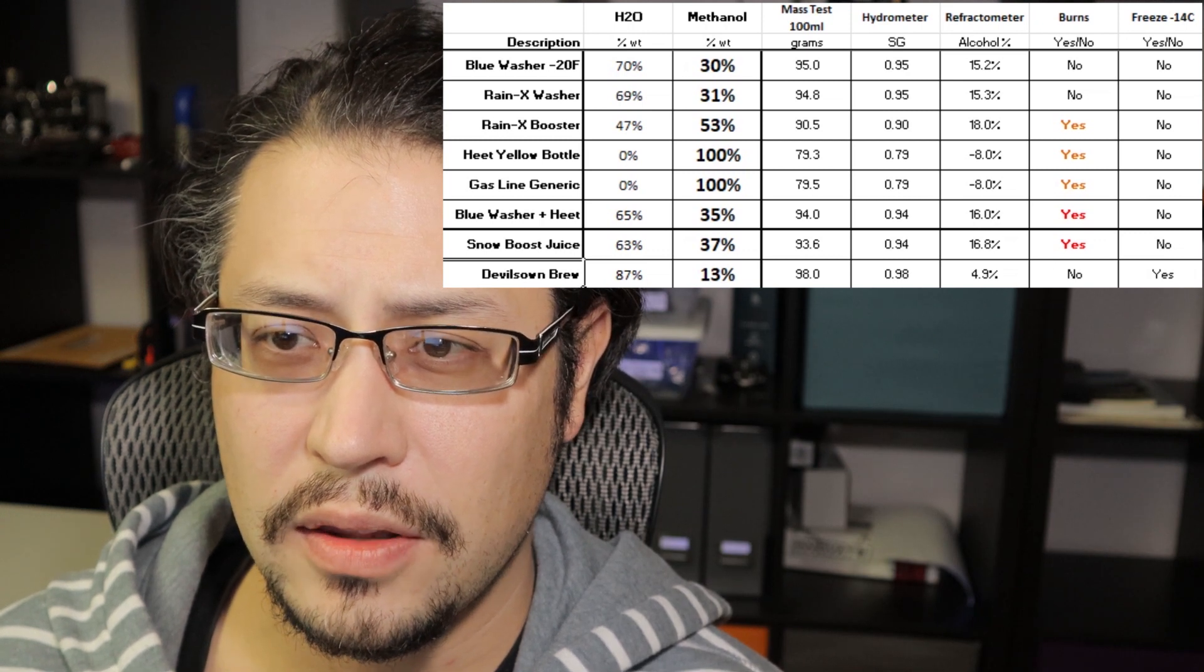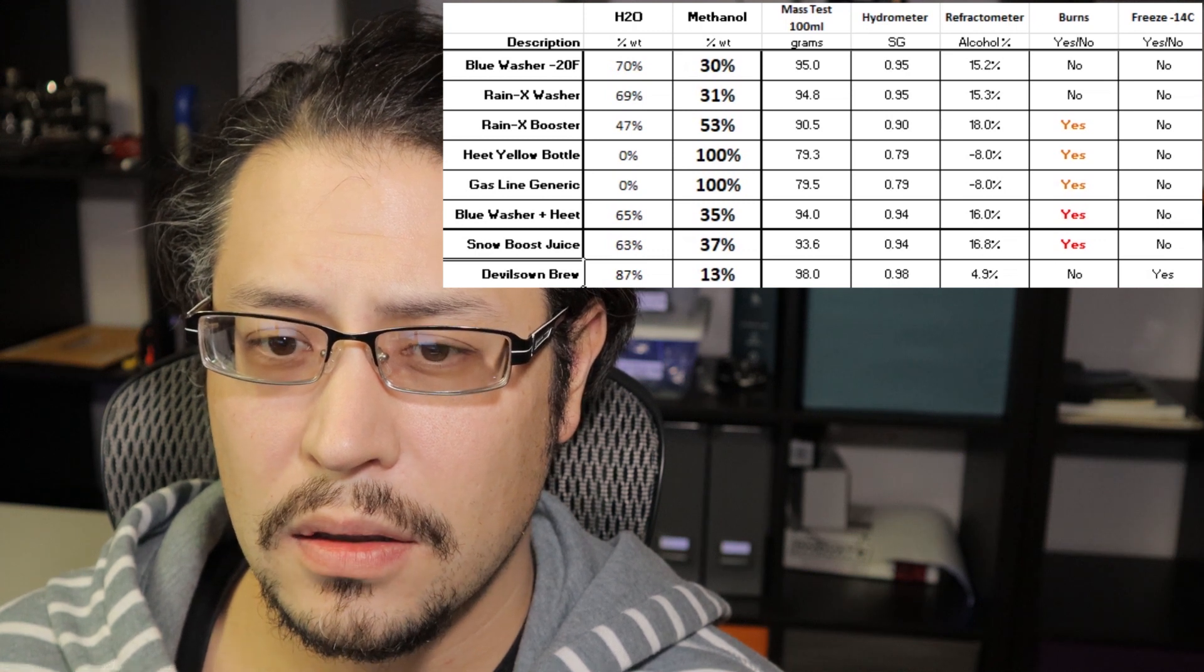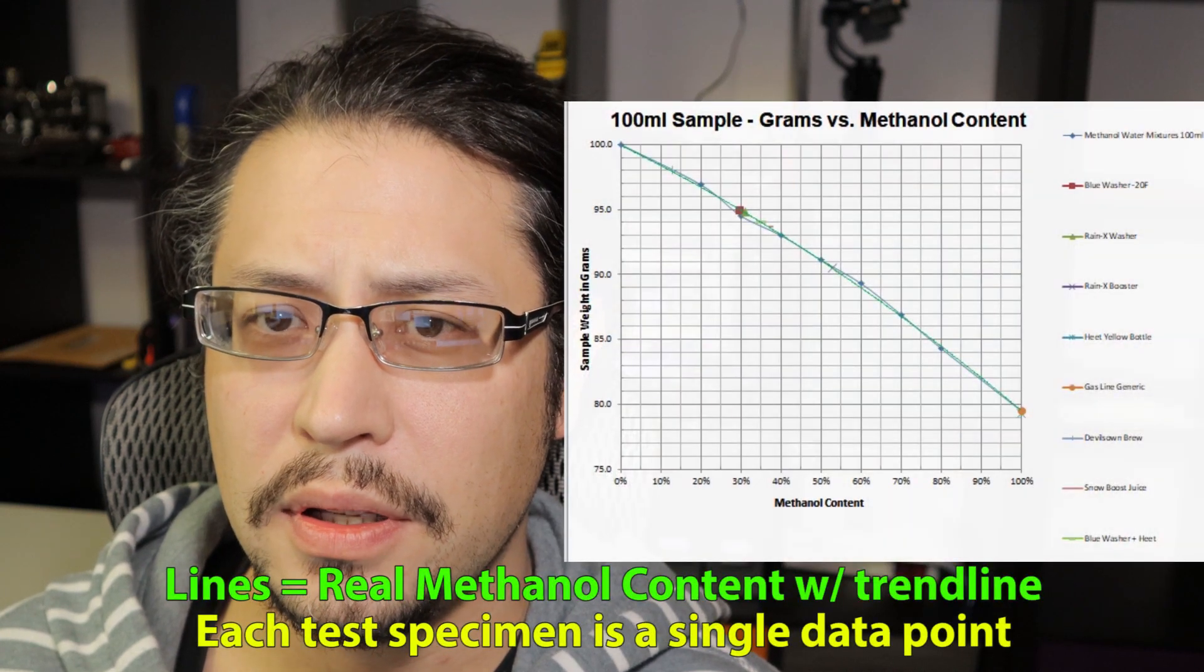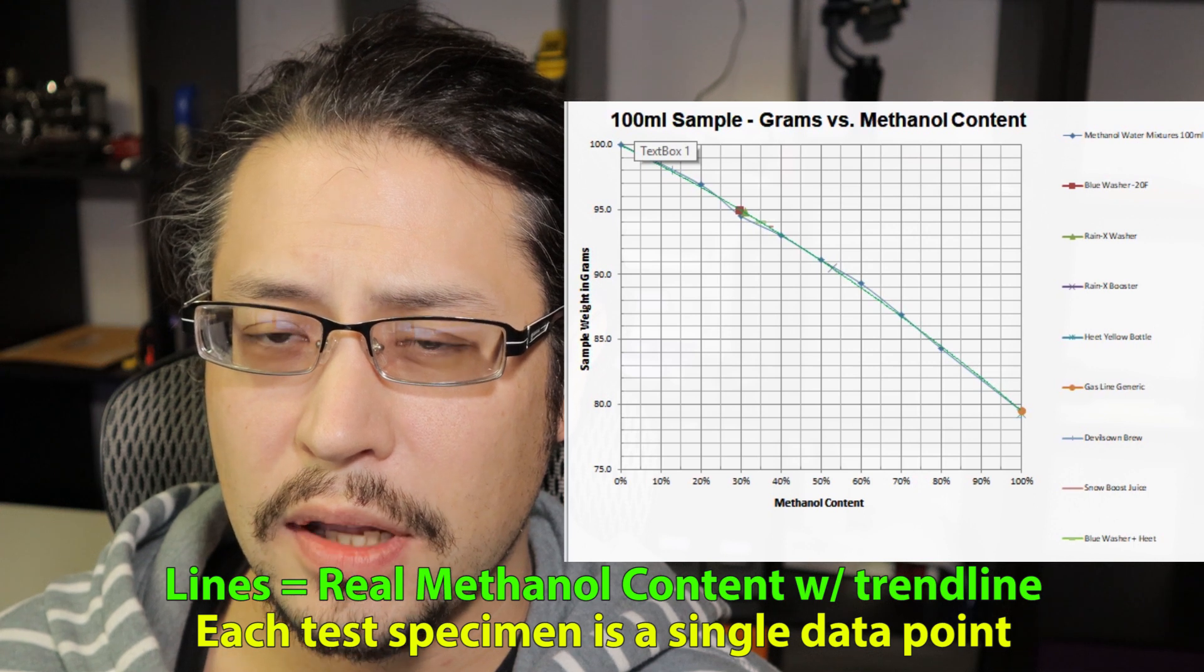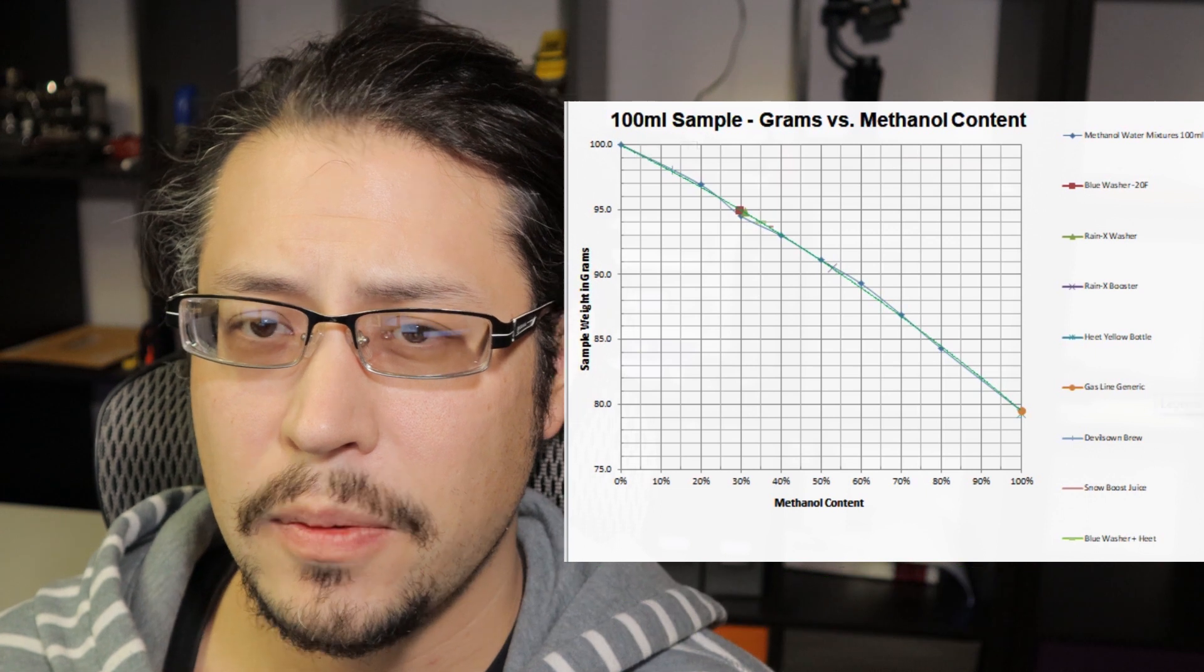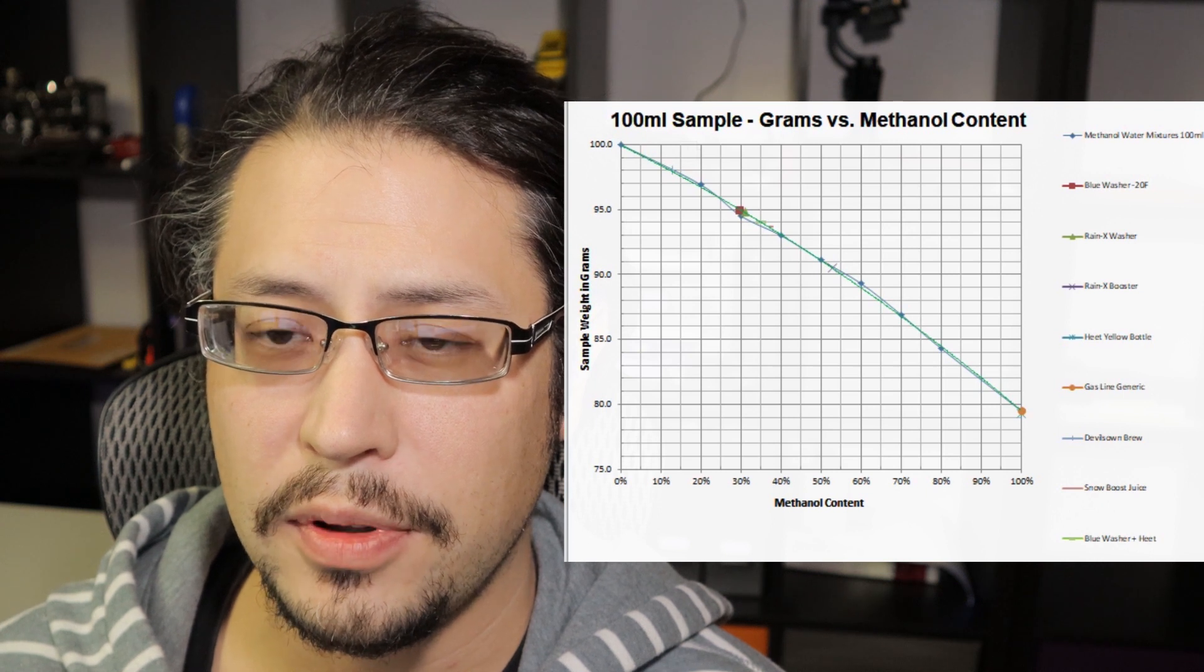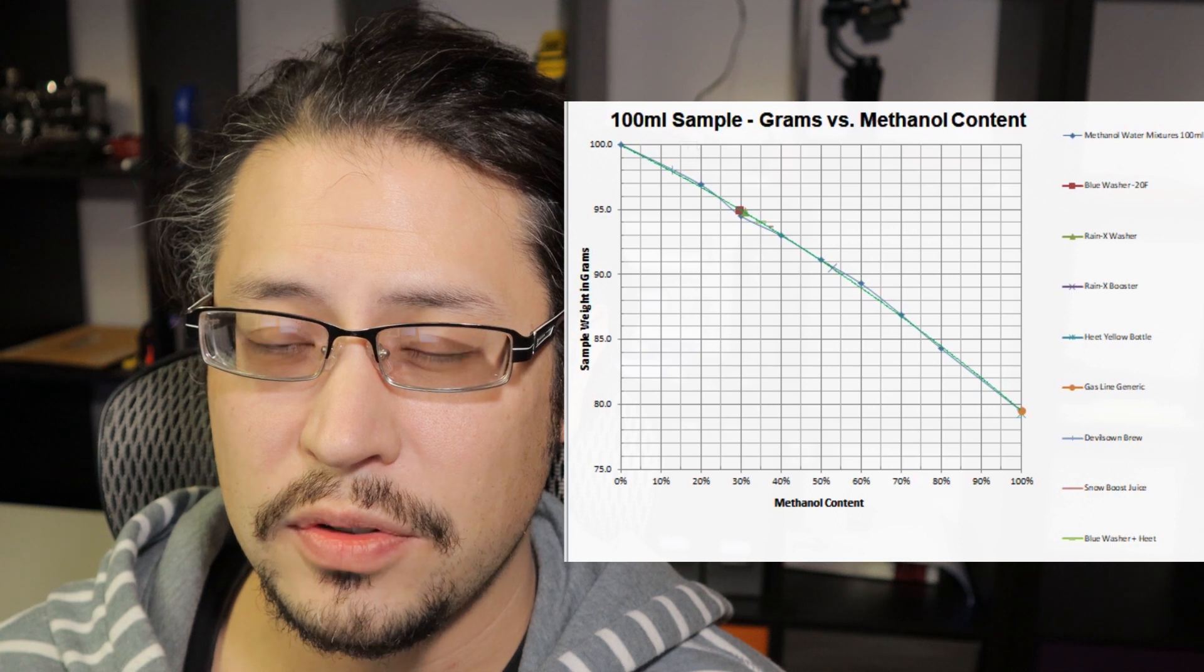Let's check out these charts. Now we're back here. This is our 100 milliliter sample, grams versus methanol content. It means if you take a graduated cylinder, 100 milliliter graduated cylinder, and fill it with whatever mystery sample - this Devil's Own stuff that you have or this boost juice you have.